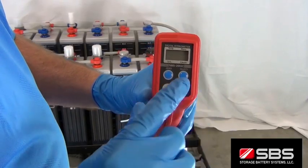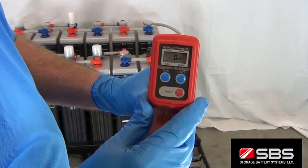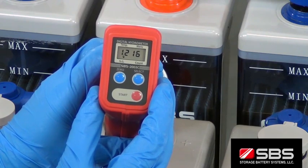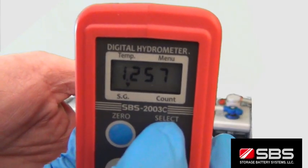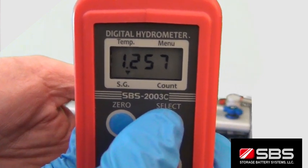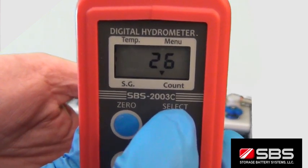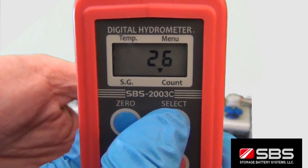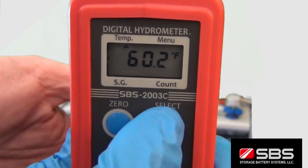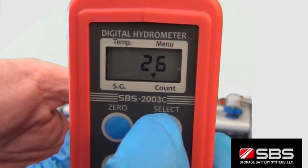Press the red start button to begin the measurement, and within three seconds, a temperature corrected specific gravity reading is displayed. If you wish to also view the sample's temperature or sample count, press the select button to toggle between readings. At this point, the SBS 2003 has recorded the readings in its internal memory and advanced the count by one, and you're ready to take your next reading.